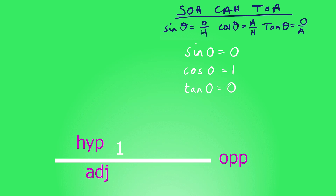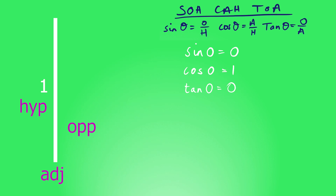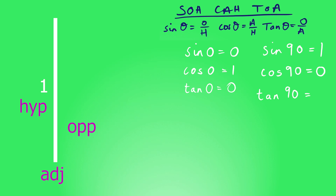Now open up that angle all the way to 90 degrees. It's not really a triangle anymore — just a straight vertical line. The sine of 90 tells us the height, and since the hypotenuse has length one pointing straight up, sine 90 equals one. Cosine of 90 tells us the width, but it's pointing straight up so there's no width — cosine 90 equals zero. Tan 90 is opposite over adjacent, which is one divided by zero. You can't divide by zero, so tan 90 is undefined.